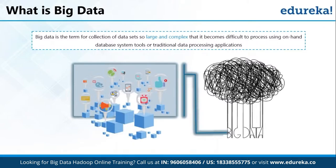Let us look at the proper definition of big data. Big data is a term for a collection of data sets so large and complex that it becomes difficult to process using on-hand database system tools or traditional data processing applications. The real problem is there is too much data to process — when traditional systems were invented, we never anticipated dealing with such enormous amounts of data. The question is: how do we classify some data as big data? How do we know which kind of data is going to be hard to process? Well, we have the five V's to tell us that.